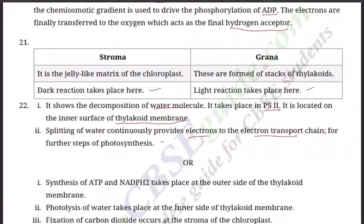We write 2H2O giving rise to 2H+ — protons — plus oxygen, which is essential for us, and 4 electrons. These released electrons go to ETC — the electron transport chain. In ETC there will be 5 stages, 5 phases, and finally ATP will be synthesized.